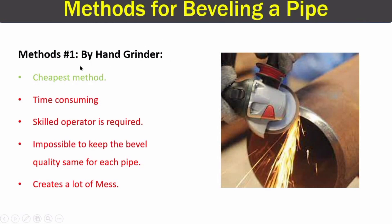The first method for cutting a bevel is by a hand grinder. In this image you can see a person cutting a bevel using a hand grinder. The good thing about this method is that it is very cheap. However, it is very time consuming, and since bevel quality directly affects welding quality, we require a skilled operator. Even with a skilled operator, the bevel degree will not be consistent for every pipe, which will negatively affect welding quality.